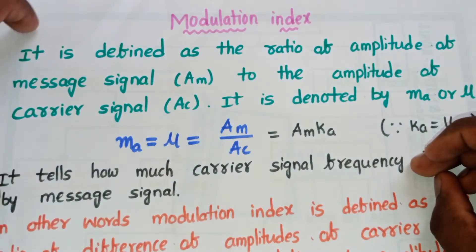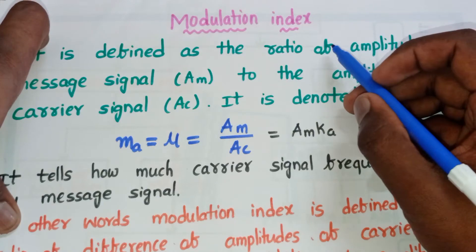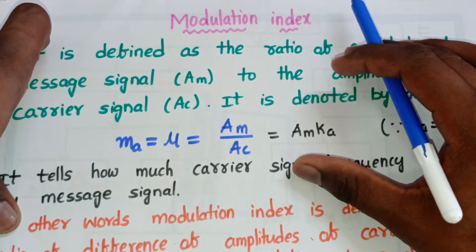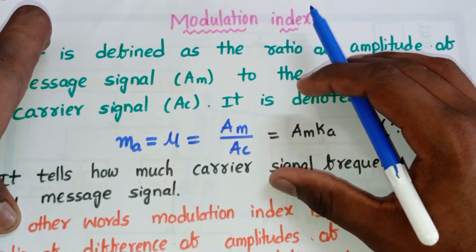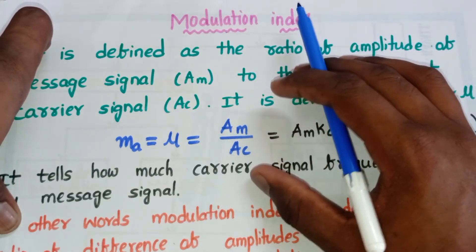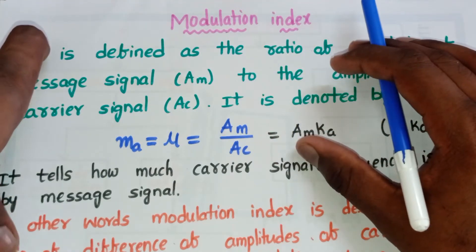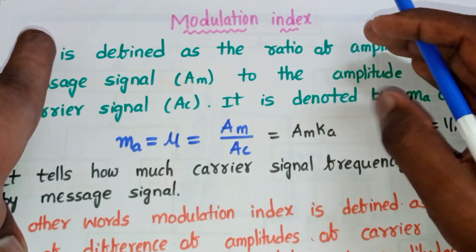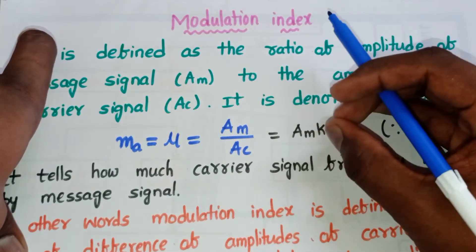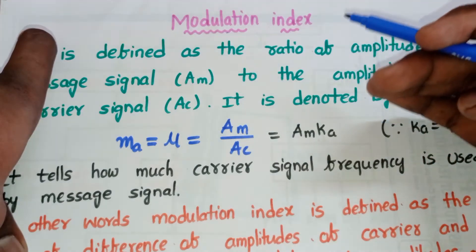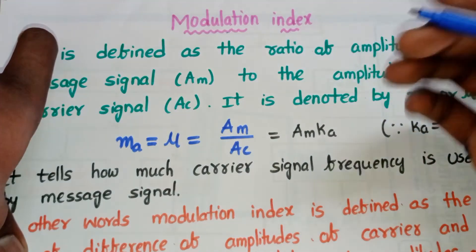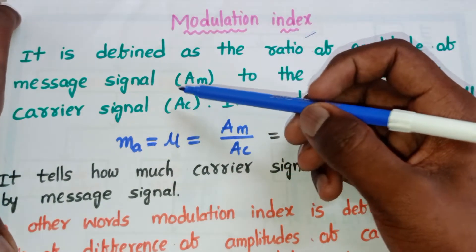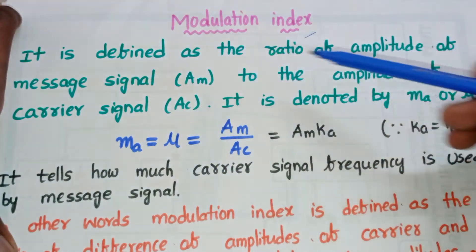In this video we'll discuss one of the important parameters in modulation, that is the modulation index. Before going to the definition of modulation index, let's understand its use. The modulation index tells us how much of the carrier signal is used for transmitting our message signal, or how much carrier signal is sufficient for modulation.